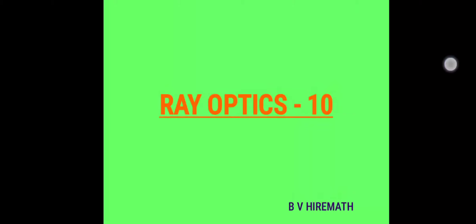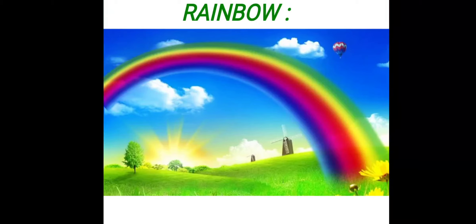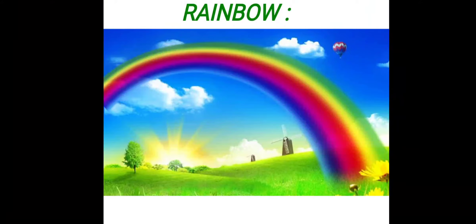Hello everyone, today we are going to discuss one of the colorful parts of ray optics - that is the rainbow. A rainbow is nothing but a spectrum of sunlight in nature. A spectrum is a group of colors. The rainbow is due to the combined effect of dispersion, refraction, and total internal reflection of sunlight.